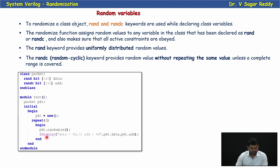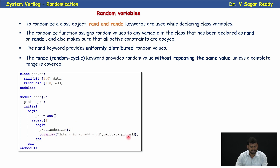I'm repeating the randomization statement four times using PKT.randomize(). The randomize() method is a built-in method that randomizes all variables declared with rand and randc. Then I'm displaying those variables.